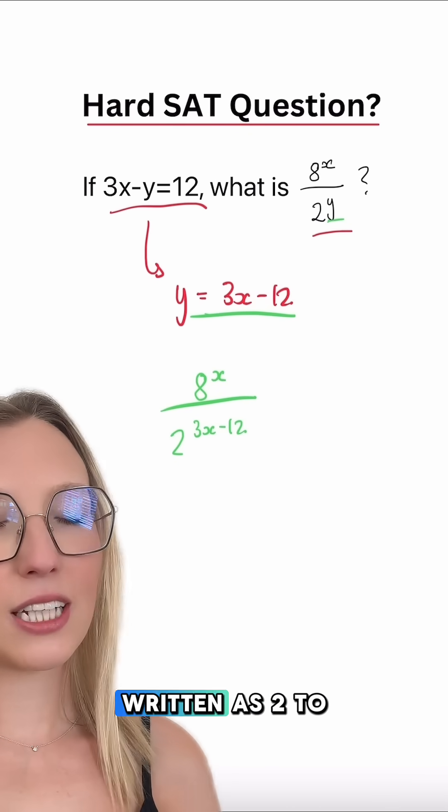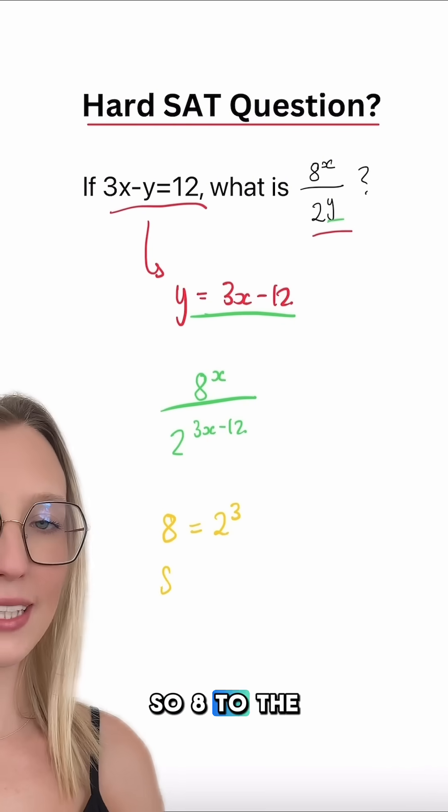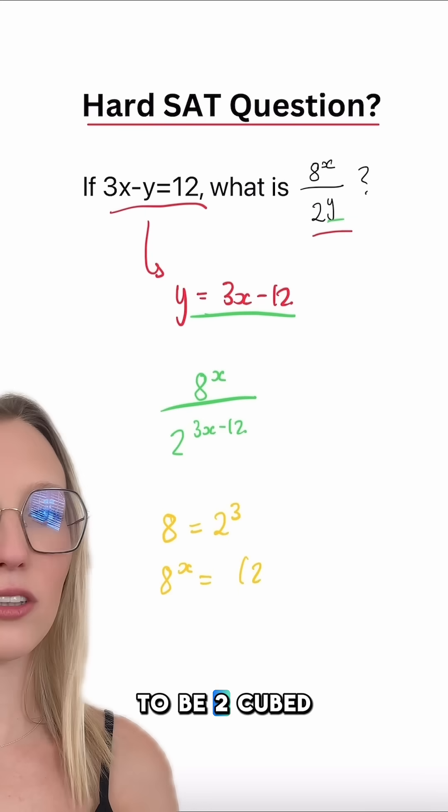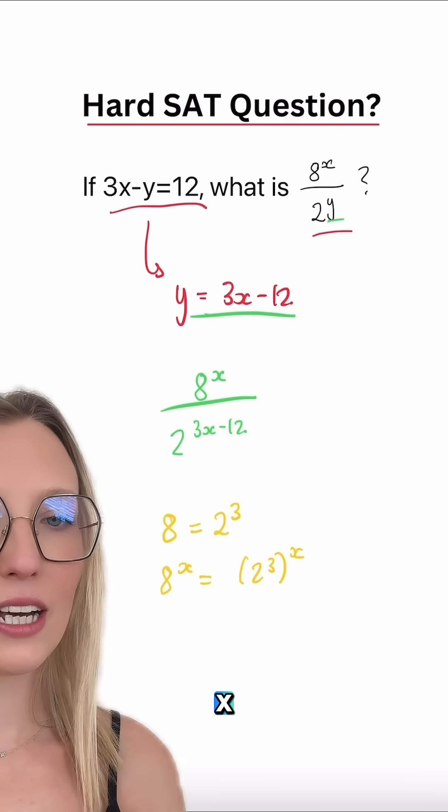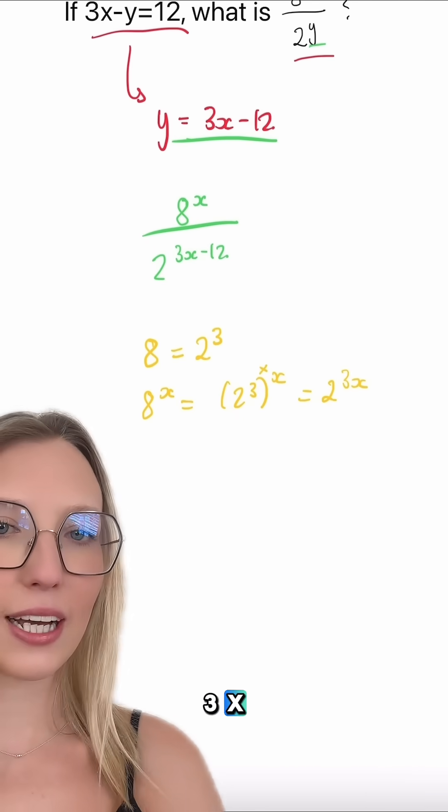Now, we know 8 can be written as 2 to the power of something. Well, 8 is 2 cubed. So 8 to the power of x is just going to be 2 cubed to the power of x. When we've got a power to another power, we can multiply these powers to get 2 to the power of 3x.